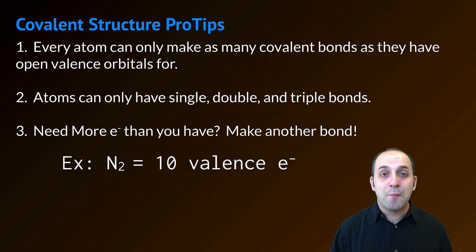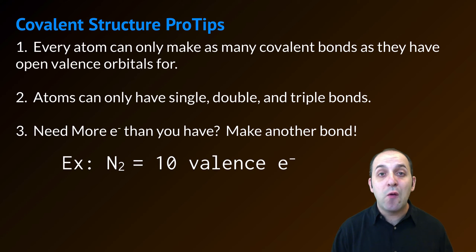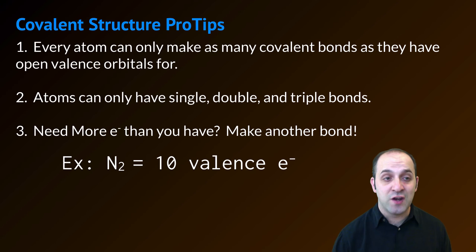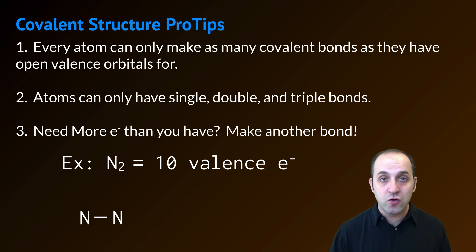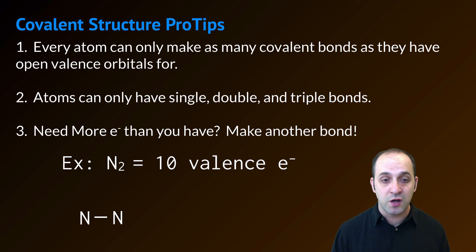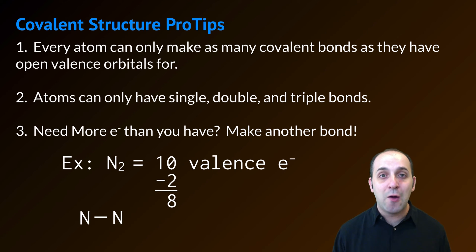Let's look at an example of diatomic nitrogen, N2, and see how we can use these rules to make our structure. N2 has 10 valence electrons — each of the nitrogens has five. I'm going to draw my skeleton structure. I've got a nitrogen covalently bonded to another nitrogen. I've just used two valence electrons, so I now have eight that remain.